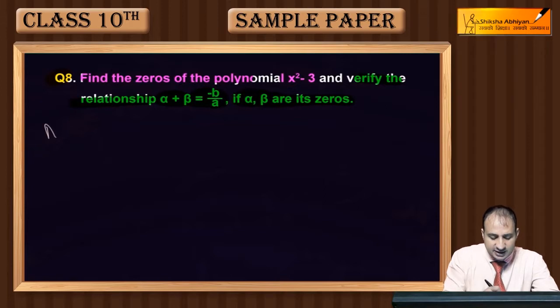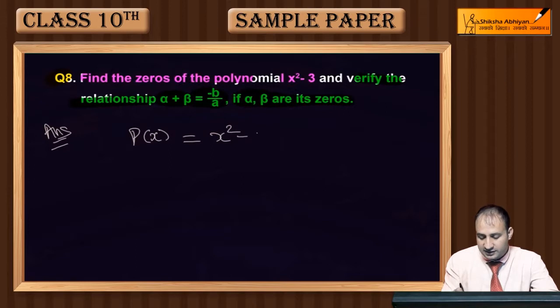First, the polynomial you can see is P(x) = x² - 3. Now for zeros, put the polynomial equal to zero.